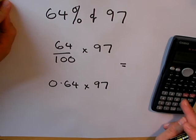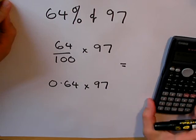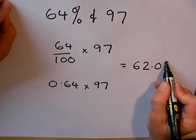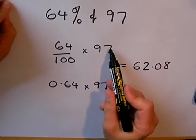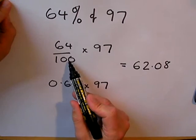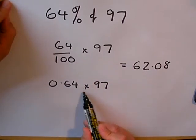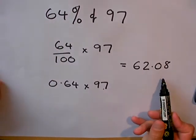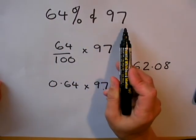Use your calculator to work out the answer, 62.08. 64 multiplied by 97 divided by 100, or 0.64 multiplied by 97. Both of those give the same answer to 64% of 97.